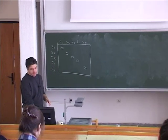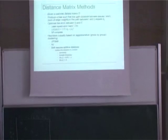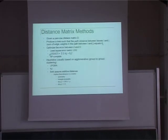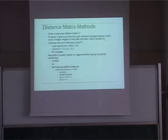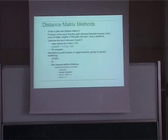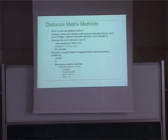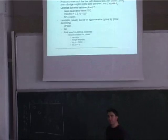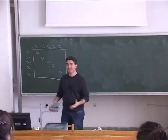Distance matrix methods require a pairwise distance matrix D and produce a tree. This is like an optimization problem. We have pairwise distances and we can generate many different trees for these species. The question is: which tree is the better tree? Which tree better represents this distance matrix?